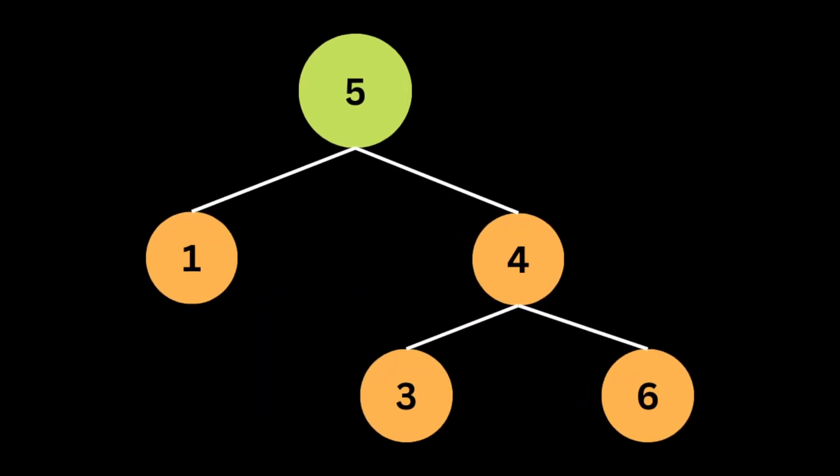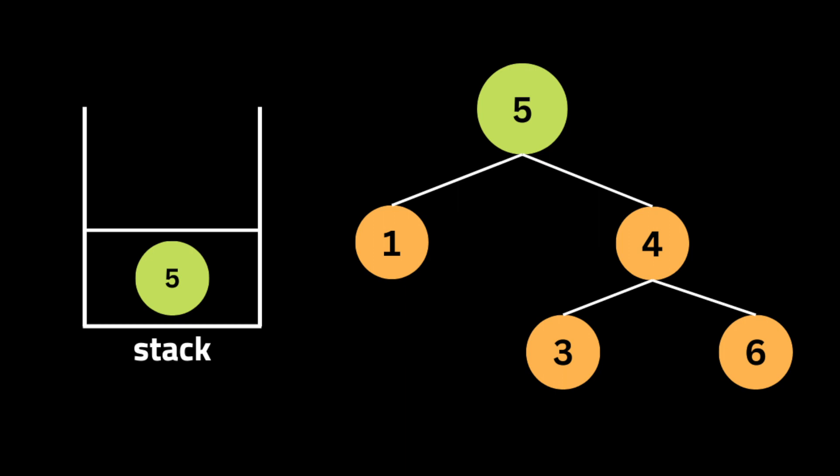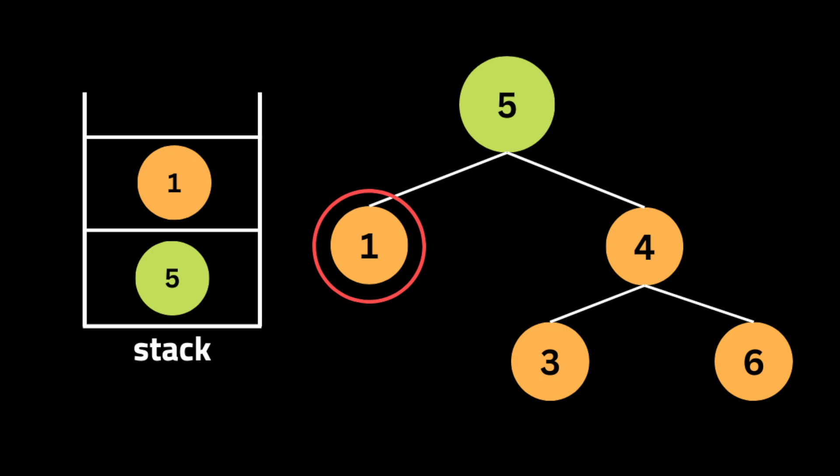We then start iterating through the tree in order using the stack to keep track of nodes that still need to be visited. As an in-order traversal, we visit nodes in the order: left child, root, right child. At the first iteration we append the root value — five — to the stack, then the left child — one.